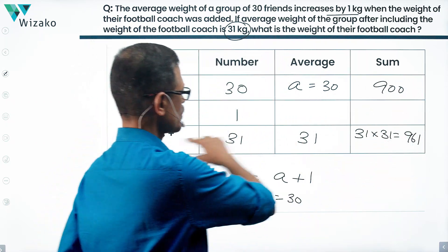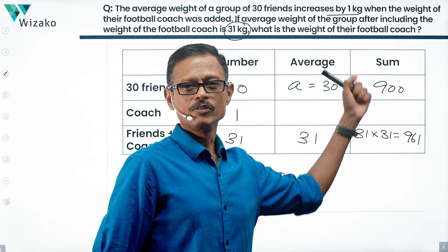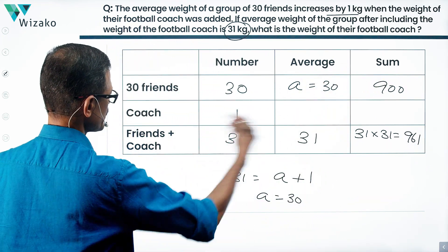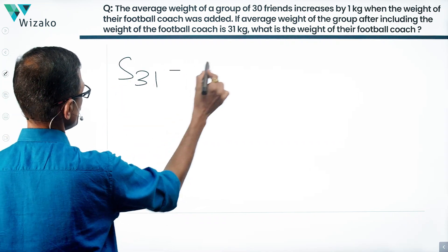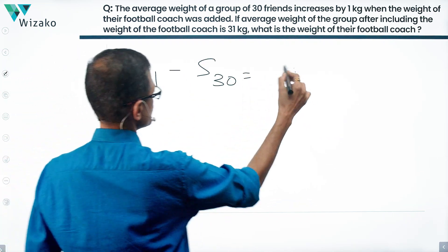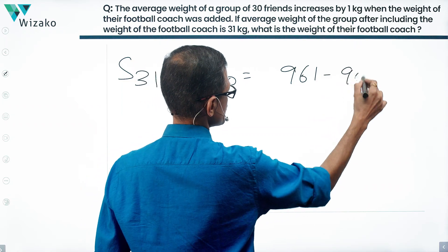Very straightforward. With the coach, the weight is 961 totally. Without the coach, the weight is equal to 900. Therefore, the weight of the coach is sum of all 31 minus sum of 30, which is 961 minus 900.